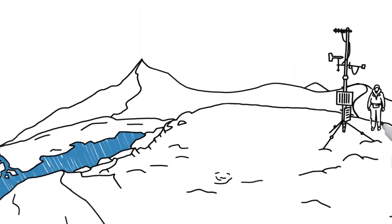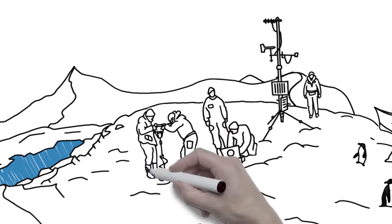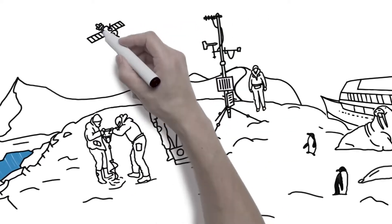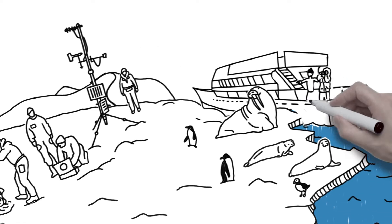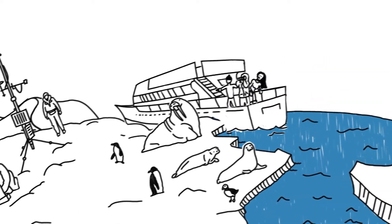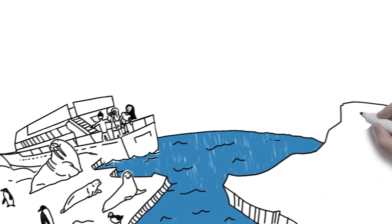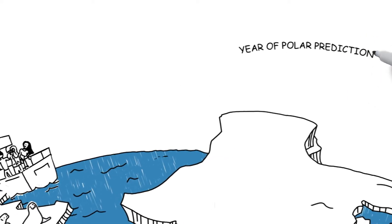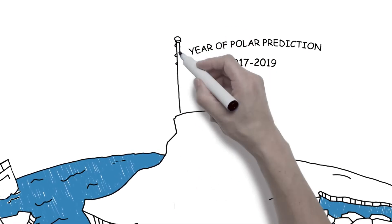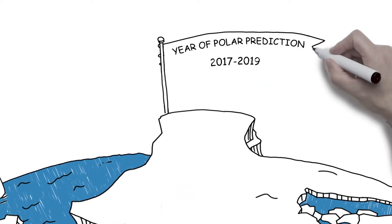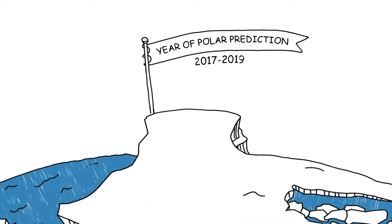Social scientists will look at how polar forecasts can be factored into socio-economic decision-making, whilst key stakeholders in transport, shipping and tourism sectors will provide input on the practical needs of the user community. Core activities of the Year of Polar Prediction will take place from mid-2017 to mid-2019, to cover a complete year at both poles.